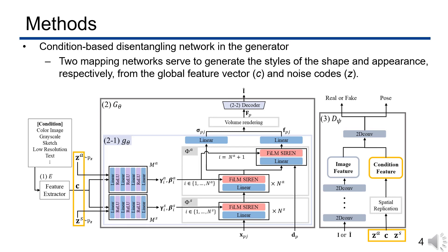Next, let me explain the fine details of the generator network. The generator consists of mapping networks, MLP blocks, and a CNN decoder network. The two mapping networks serve to generate the styles of the shape and appearance respectively, based on the global feature vector and noise codes. The MLP blocks encode style features using pairs of linear layer and activation function of feature-wise linear modulation.